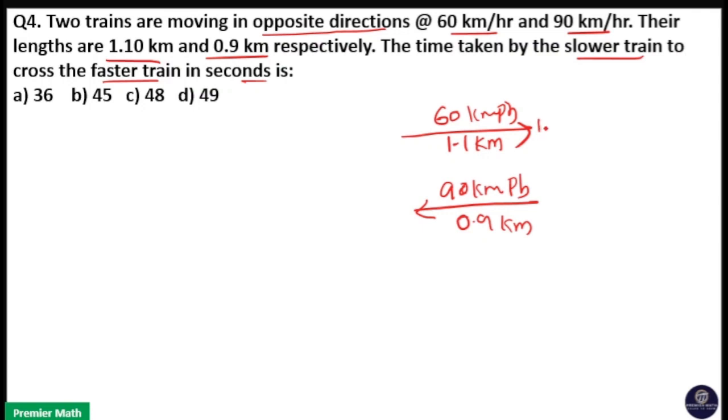When the slower train passes the faster train, the distance covered will be the slower train length plus the faster train length.